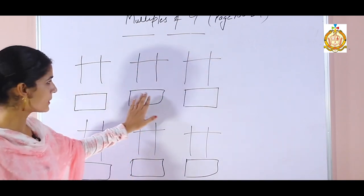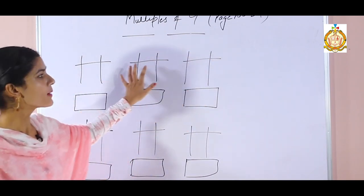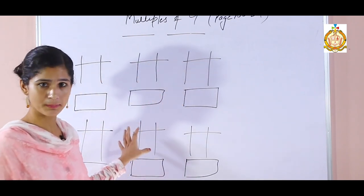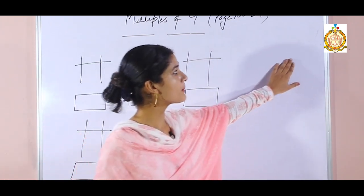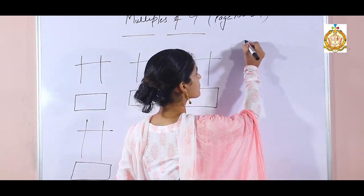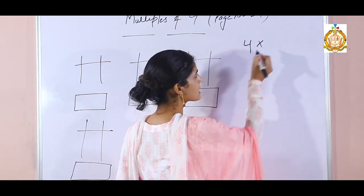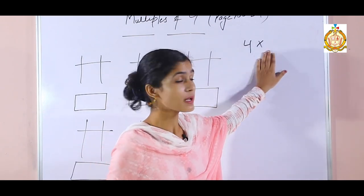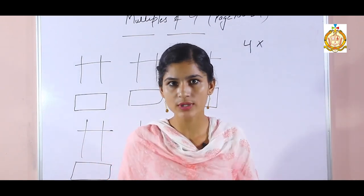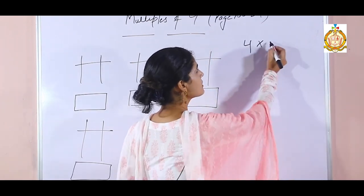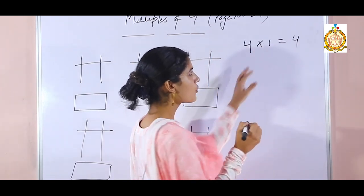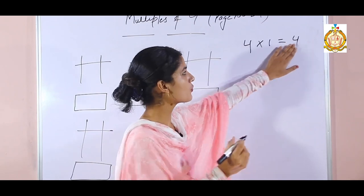We have to write the number and draw the beads. Firstly, you have to find out the multiples of 4. How? We have to multiply 4 with numbers. Numbers start with 1, so firstly multiply 4 by 1. 4 into 1 — what is the answer? 4.